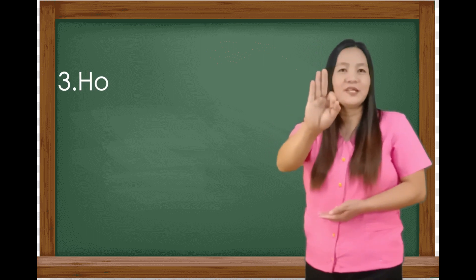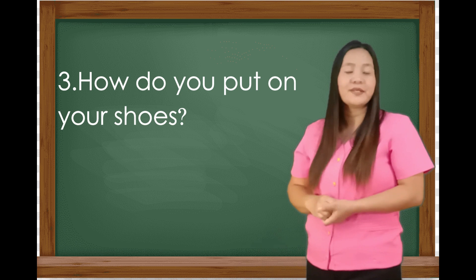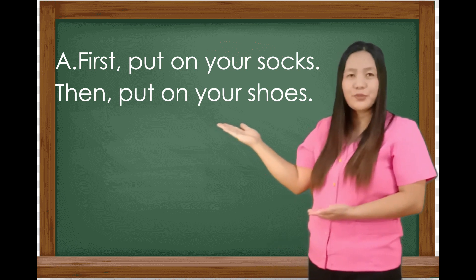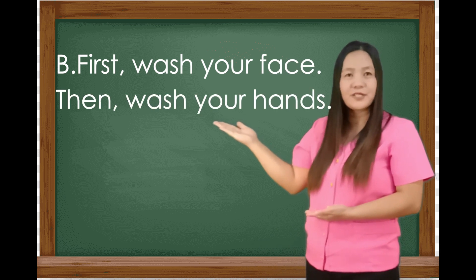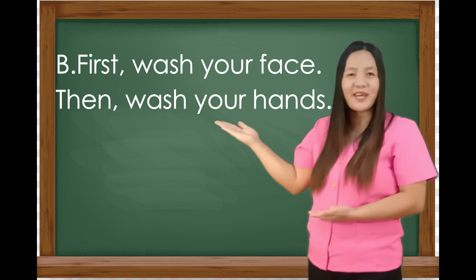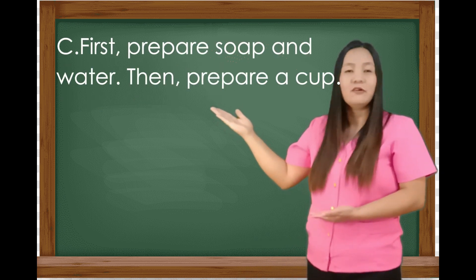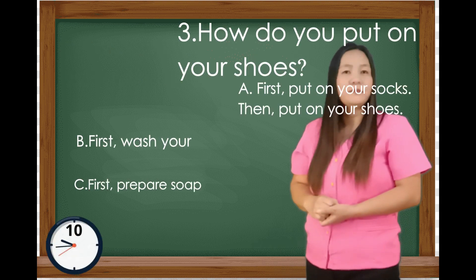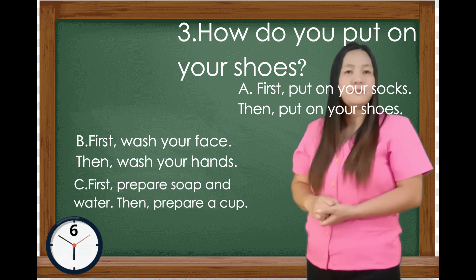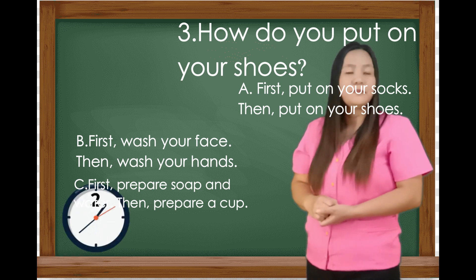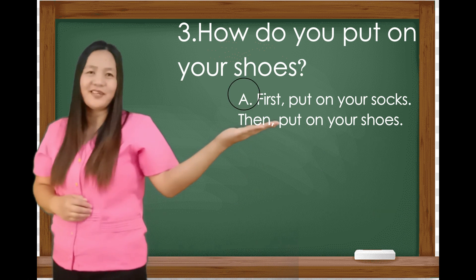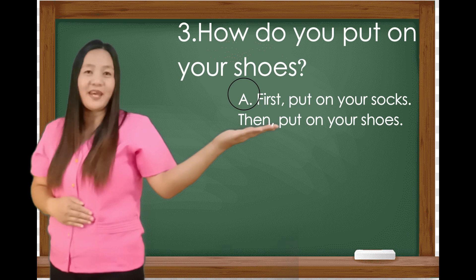Number 3. How do you put on your shoes? Letter A: First, put on your socks. Then, put on your shoes. Letter B: First, wash your face. Then, wash your hands. Letter C: First, prepare soap and water. Then, prepare a cup. The correct answer is Letter A — first, put on your socks. Then, put on your shoes.